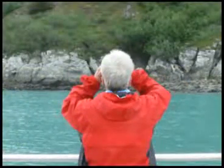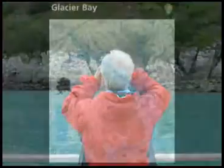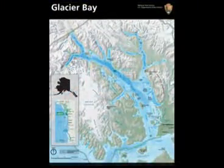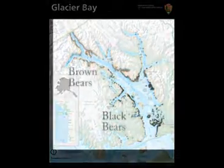Bears are often seen along Glacier Bay's beaches. Let's look at a map of Glacier Bay, and add a chart indicating where bears are seen. Brown dots represent brown bears and black dots represent black bears. From this chart we can see that brown bears are often seen in the upper reaches of the park and black bears are often seen in the lower part of the park.